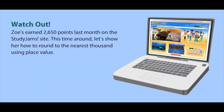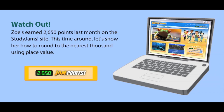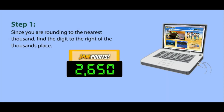Zoe got 2,650 points last month on the Study Jam site. This time around, let's show her how to round up to the nearest thousand using place value. Since we're rounding to the nearest thousand, we'll start by looking at the digit to the right of the thousands place in our number.